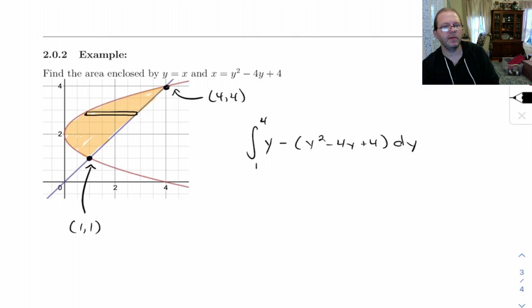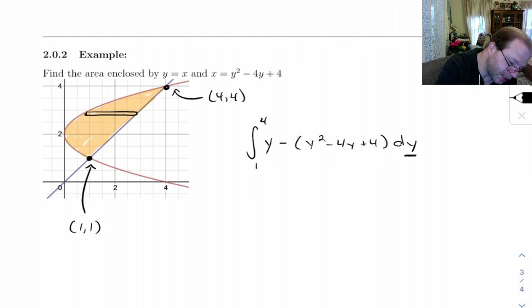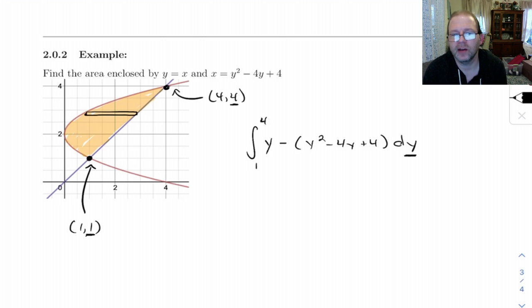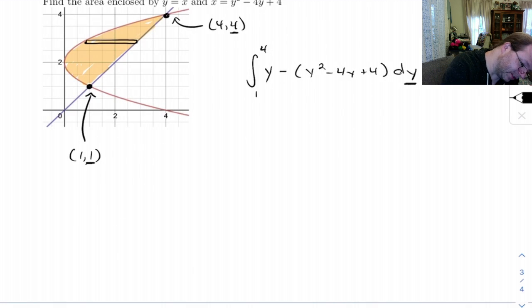And we're going from 1 to 4. Now this maybe isn't the best example of this because I've got to figure out what are my endpoints here. The way I get my endpoints, since we're doing this with respect to dy, we use the y coordinate of the two endpoints. The x and y coordinates are the same here, but we take the y coordinate for this. So let's see, this is 1 to 4, let's see, y minus negative 4y is 5y minus y squared minus